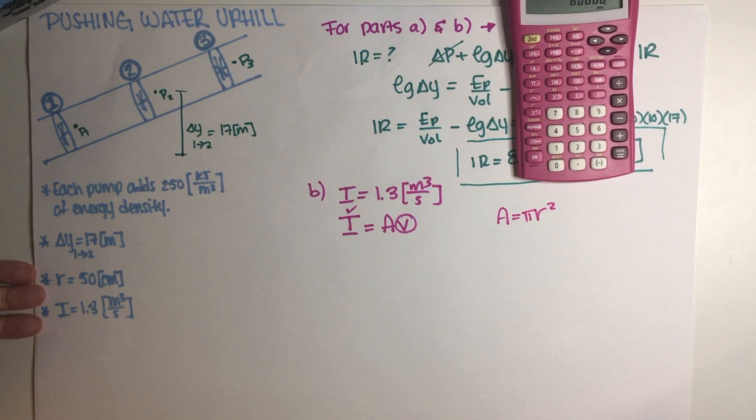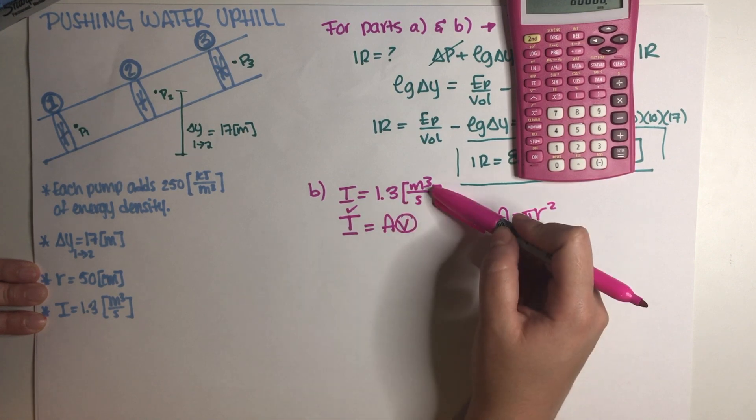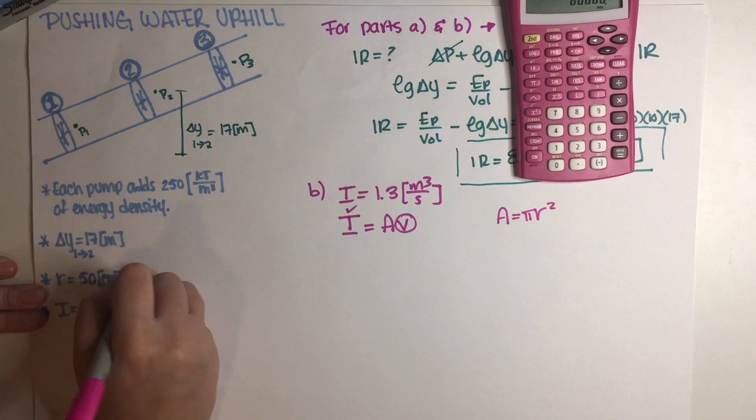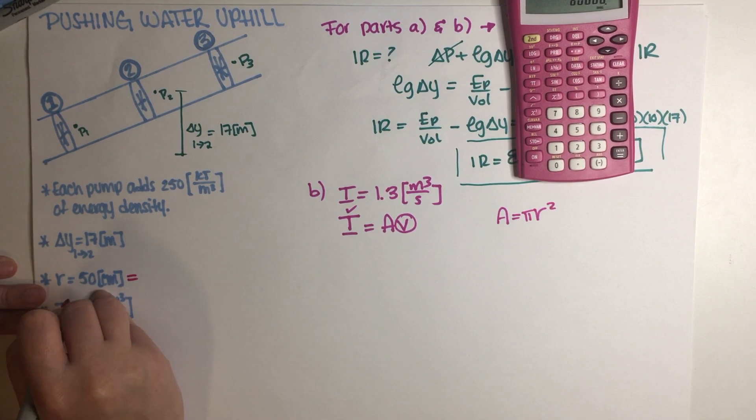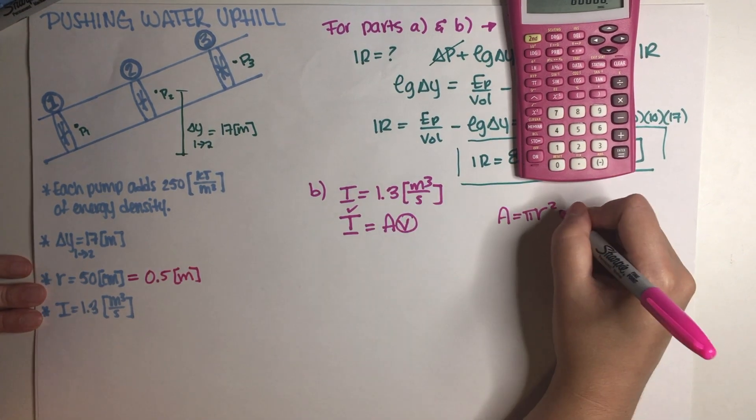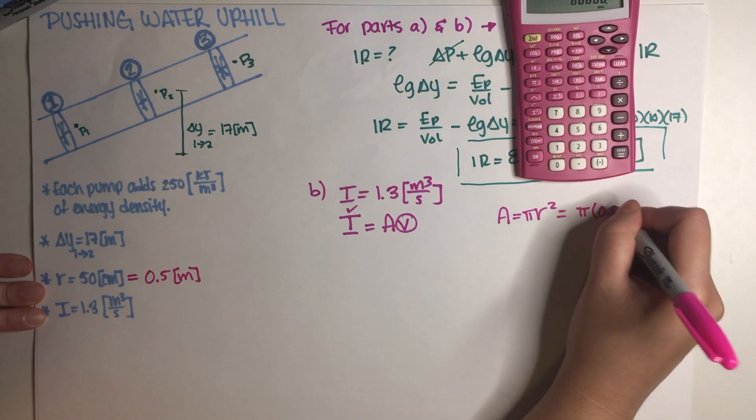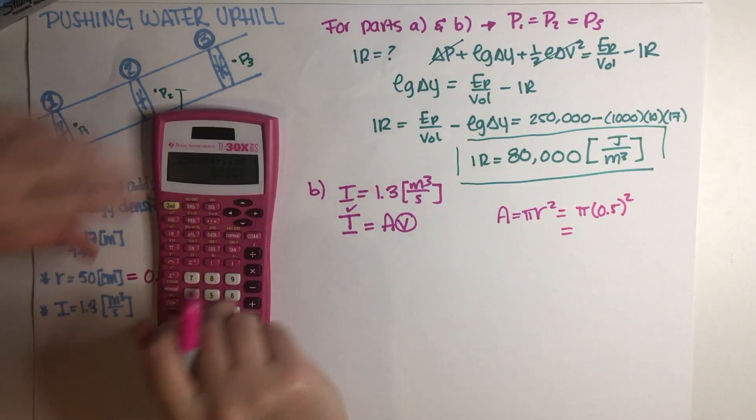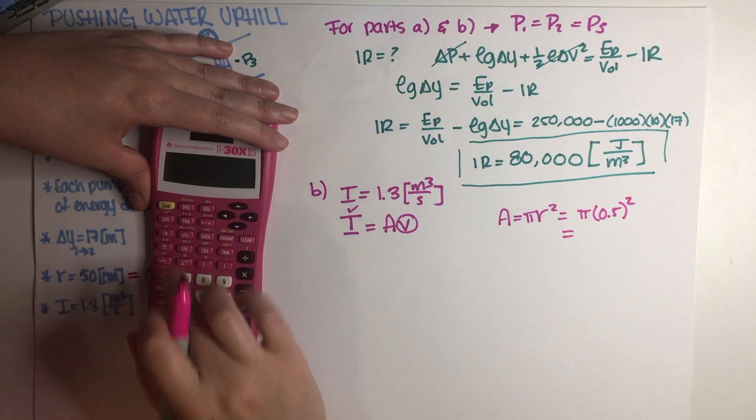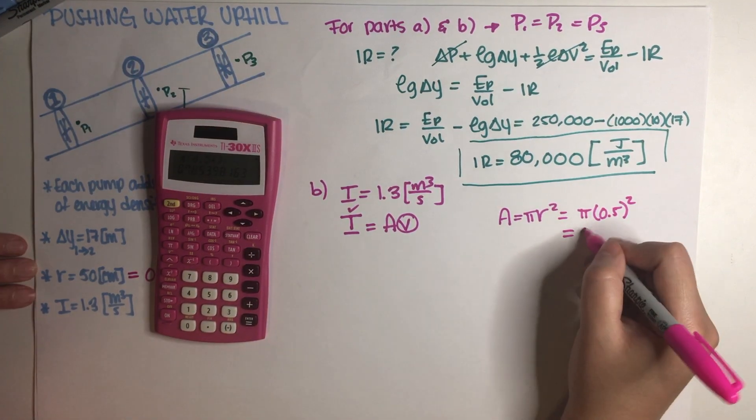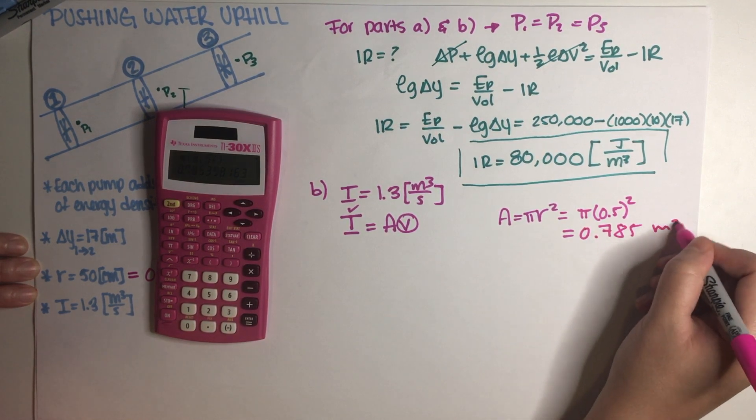So let's just go ahead and do that. So the area of the circle is just pi R squared. The only thing that's going to be an issue is that this is an SI unit. The R is not an SI unit. So we just need to change this 50 centimeters to meters. So this is actually half a meter, so 0.5 meters. So now that we have that, this is just pi times 0.5 meters squared. So this is going to be pi times 0.5 squared, 0.785 meters squared.